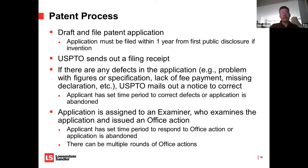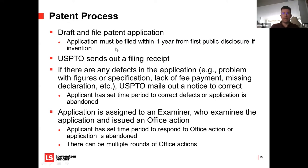One important thing to keep in mind: in the US, you have one year from the first public disclosure of an invention to file for a patent application. Once that one-year mark is passed, the invention is considered dedicated to the public and you lose the right to file. You should keep track of when you're disclosing your invention to third parties. If you're talking to companies about it, it's helpful to get non-disclosure agreements if possible. Generally, it's better to try not to disclose it until you're ready to file a patent application.